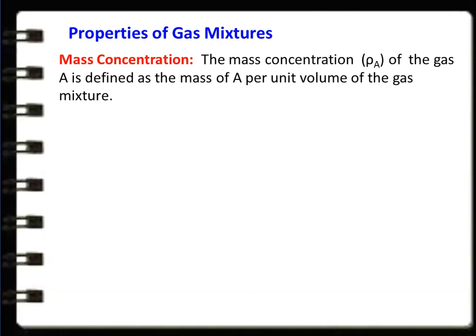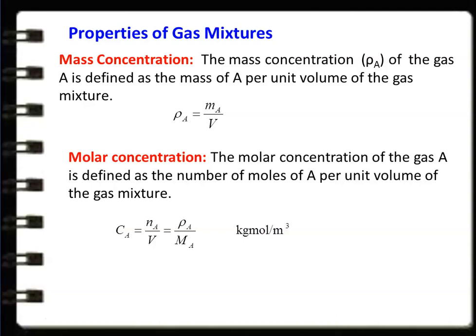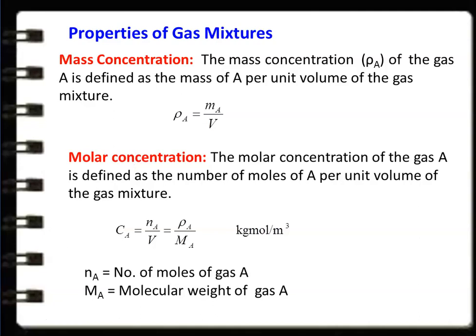In the properties of gaseous mixture, first we discuss mass concentration or density of gas A in the mixture. The mass concentration ρA of gas A is defined as the mass of gas A per unit volume of the gaseous mixture: ρA = MA / V. The molar concentration CA of gas A is defined as the number of moles of gas A per unit volume of the gaseous mixture: CA = NA / V, which equals ρA / MA, where MA is the molecular weight of gas A.